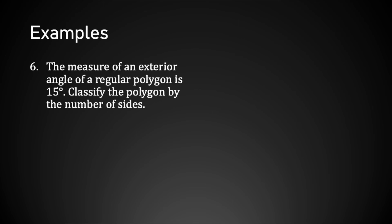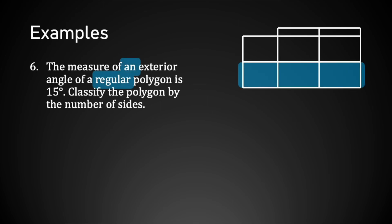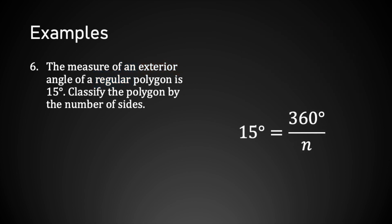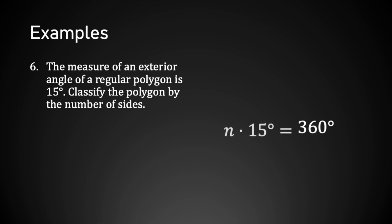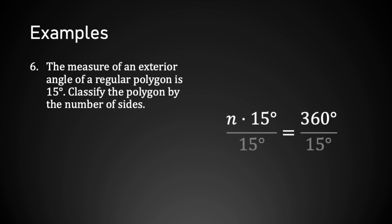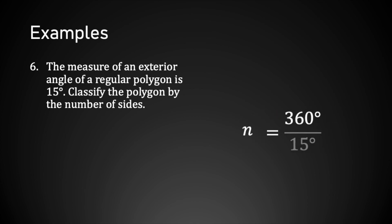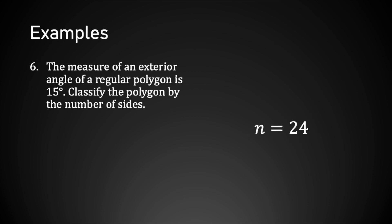Example 6: the measure of an exterior angle of a regular polygon is 15 degrees. Again, just one angle so we use θ = 360 / n. I replace θ with 15 degrees, then multiply both sides by n. That gives n × 15 degrees = 360 degrees. Dividing both sides by 15 degrees gives n = 360 / 15, which is 24. So this polygon is a 24-gon.